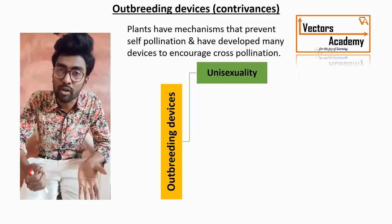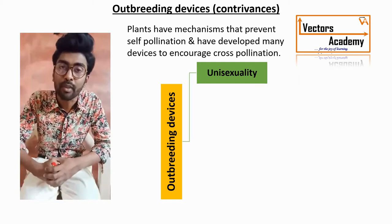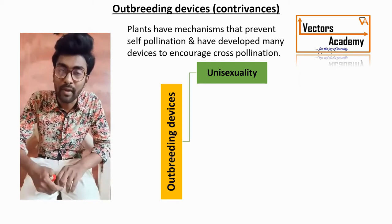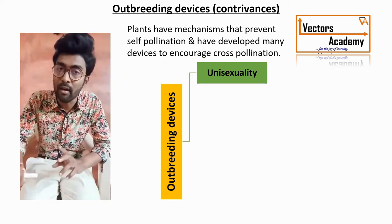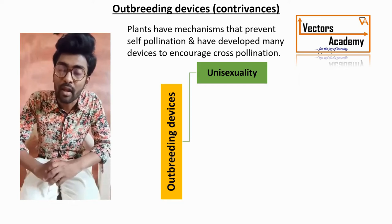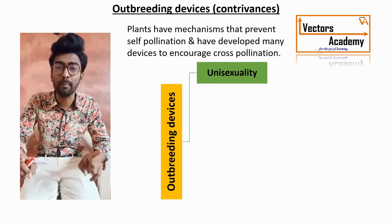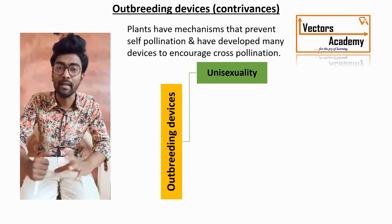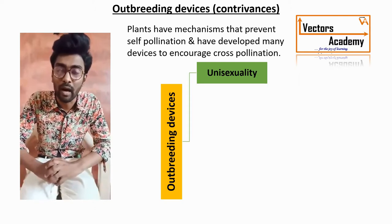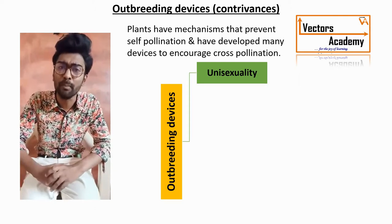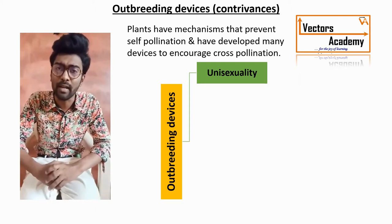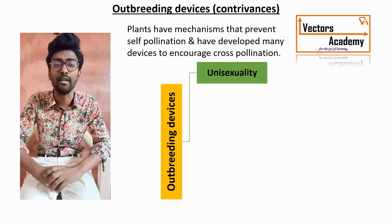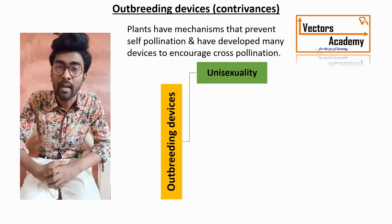It may be a monoecious plant or a dioecious plant. Monoecious means a single plant having both male and female flowers, and dioecious means two different plants having distinct male and female flowers. The best example for the monoecious plant is maize, and the best example for the dioecious plant is papaya or mulberry.